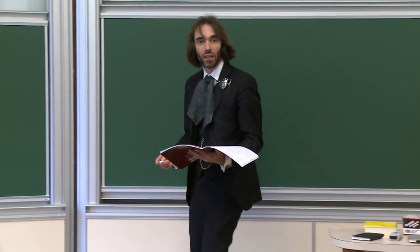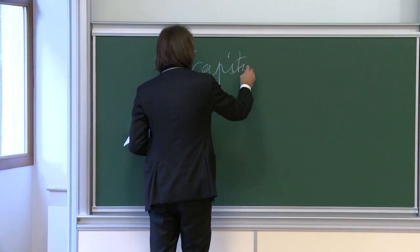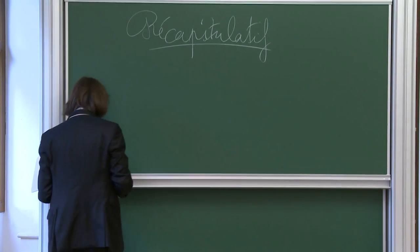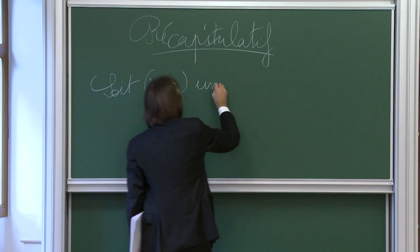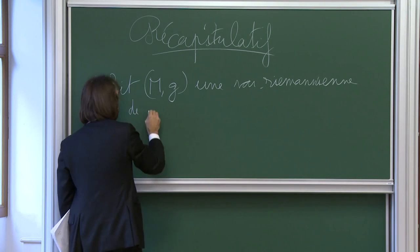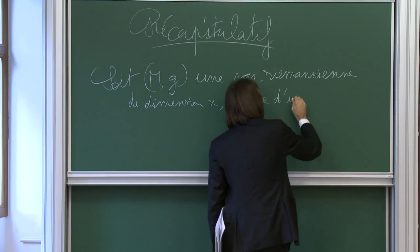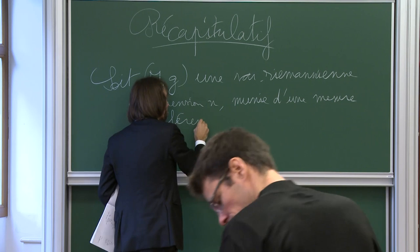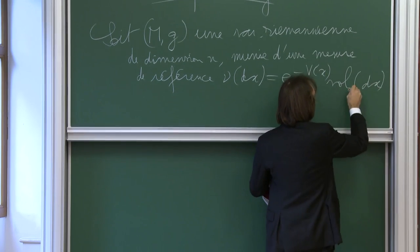On commence par récapituler, ce qui permettra à ceux qui n'ont pas pu assister à la première séance de raccrocher. Soit (M, g) une variété riemannienne de dimension m, munie d'une mesure de référence ν de la forme dν = e^{-V(x)} vol(dx), où vol(dx) est le volume riemannien.